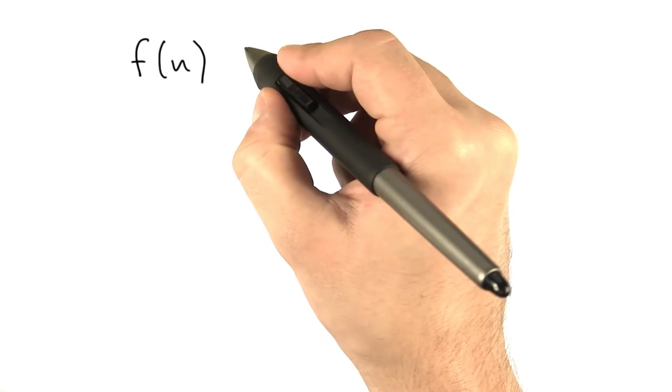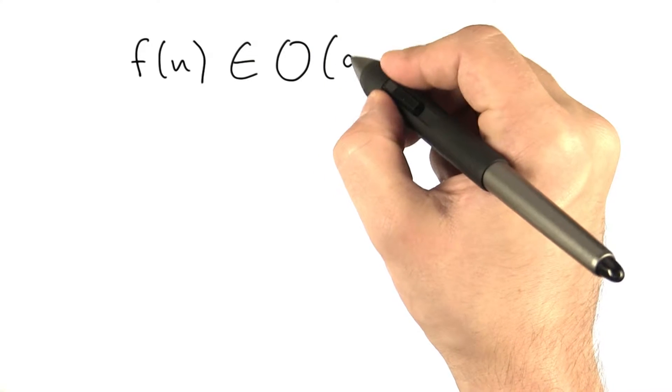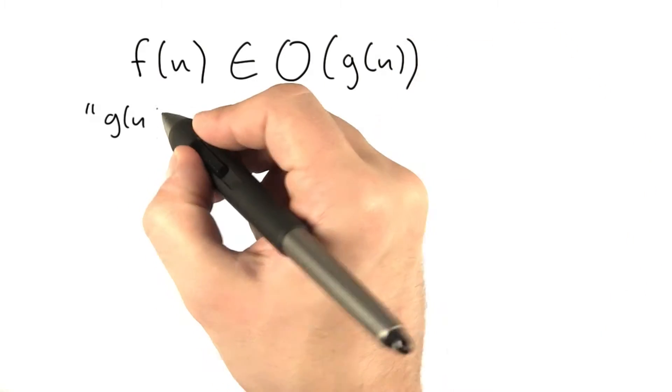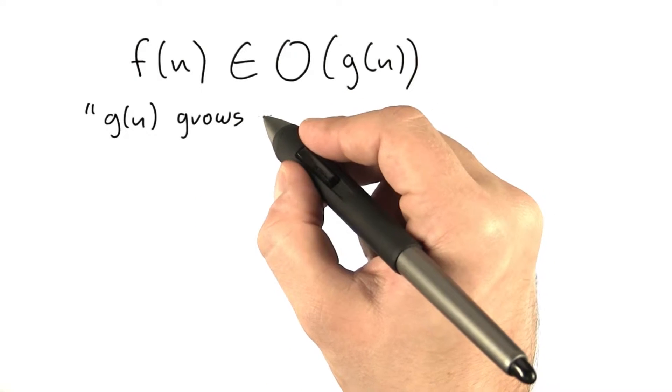If a function f(n) is contained in O(g(n)), this means that g(n) grows at least as fast as f(n).